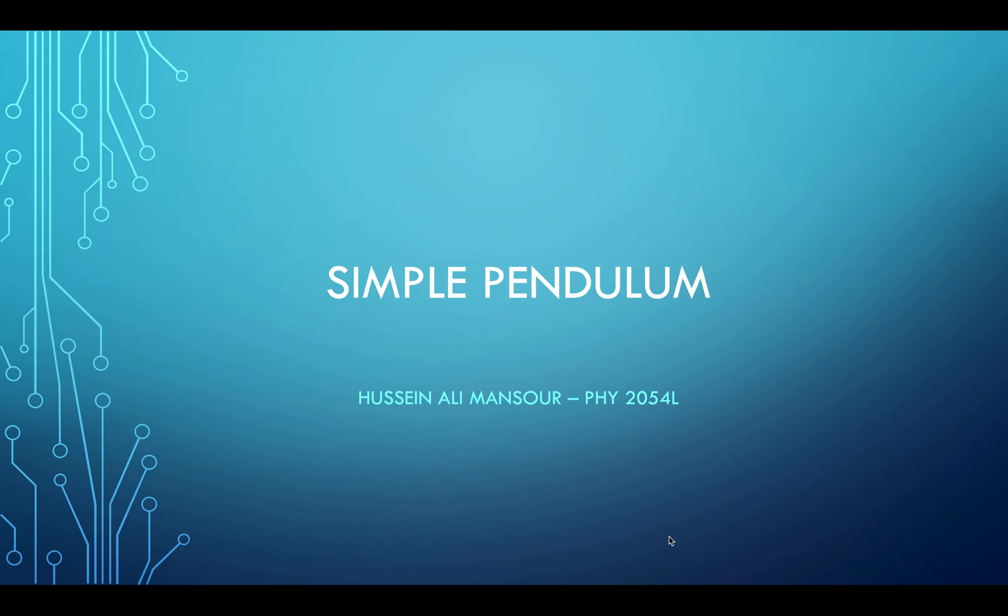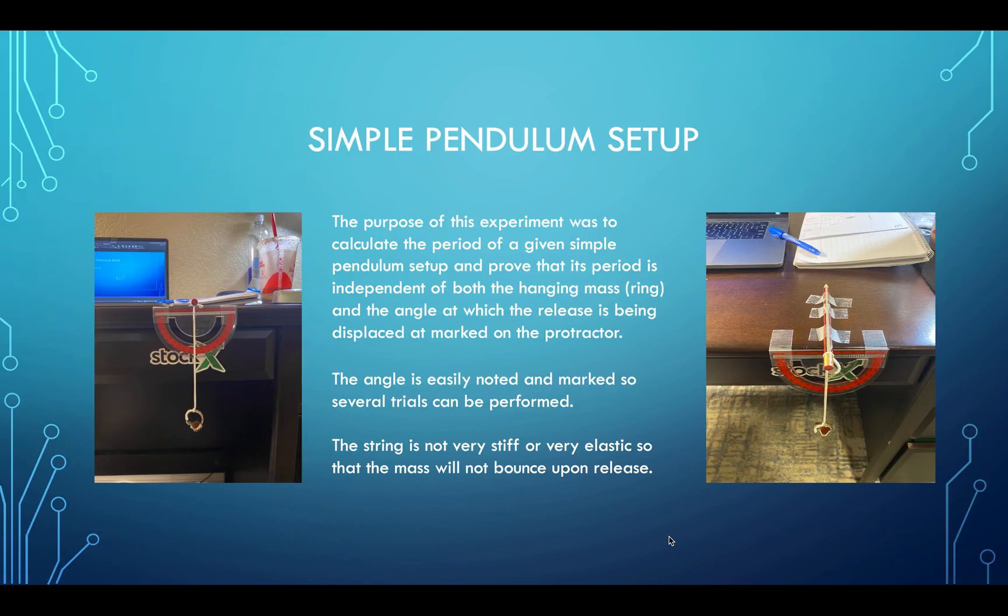When the pendulum is at rest, the displacement angle is always equal to zero degrees. As the mass is released from some angle of displacement, the string swings back and forth with gravity working as a restoring force. The period, which we will be calculating, is the time it takes to complete one full cycle. Therefore, the period of a simple pendulum is the time it takes to swing from one side to the other and back again. For example, from position A to B and then from B to A. The period has units in seconds and is inversely proportional to the frequency.